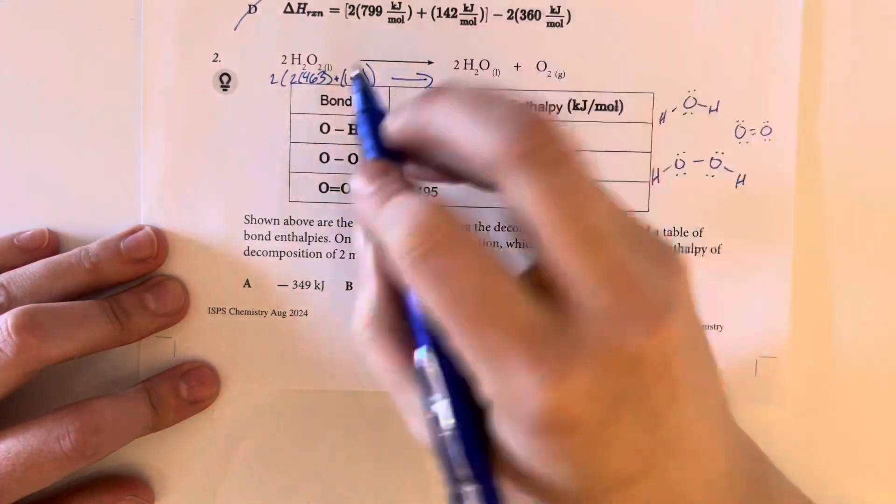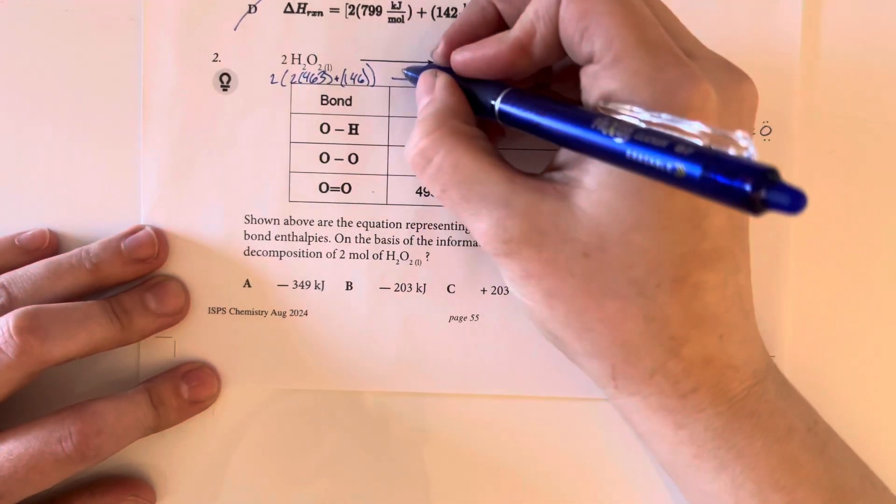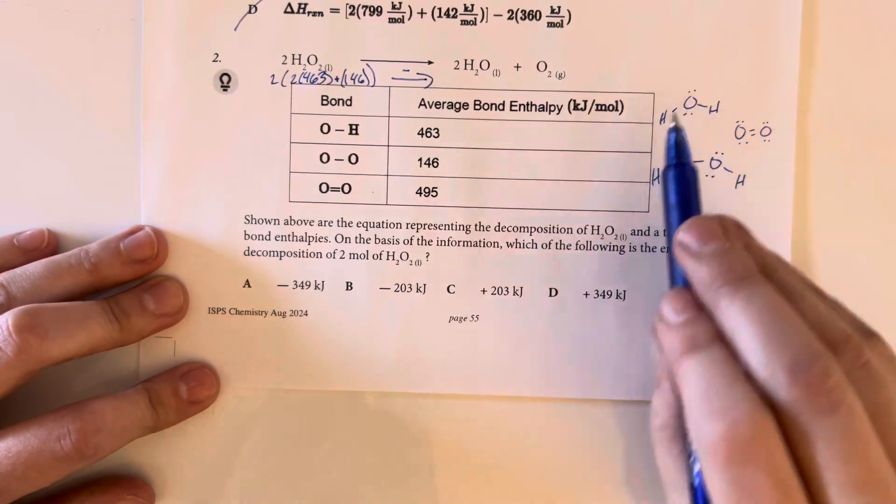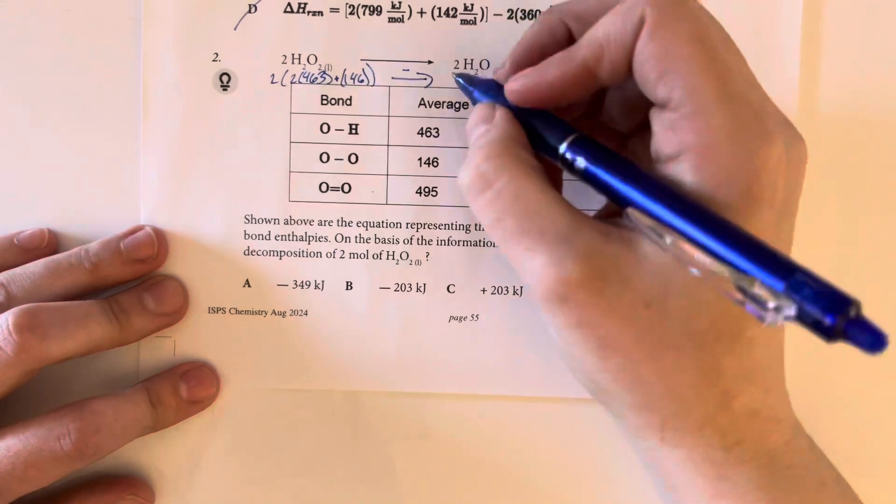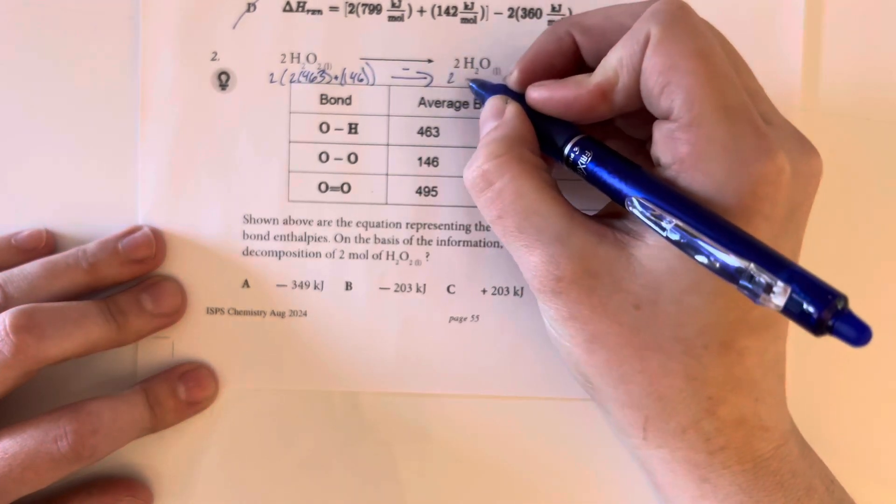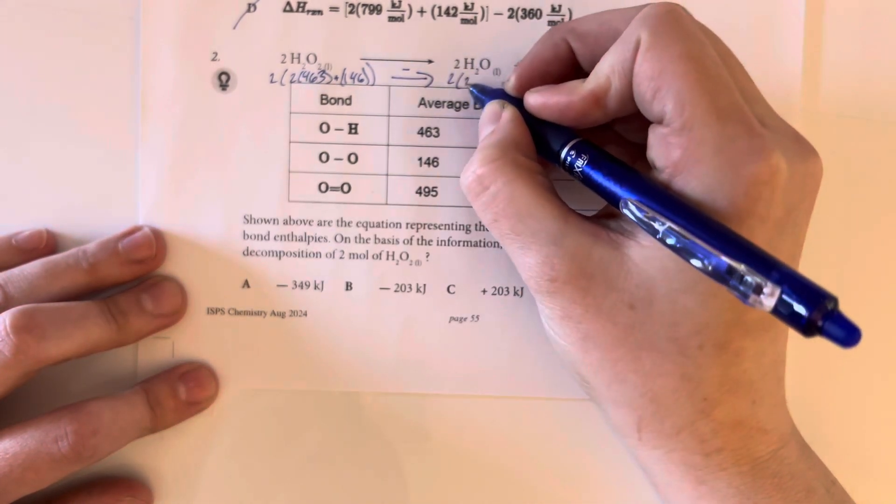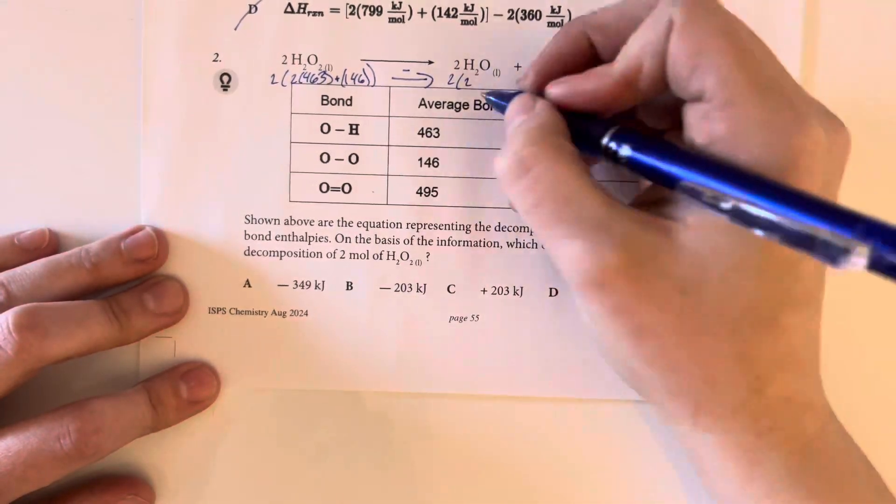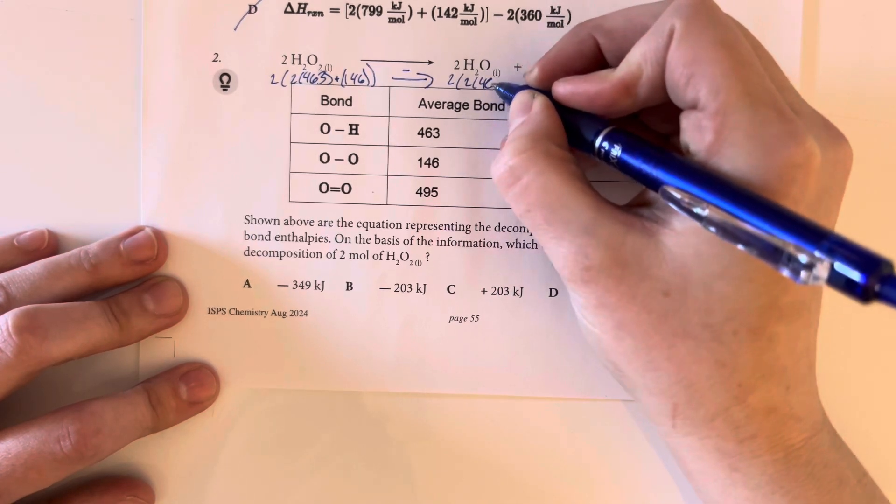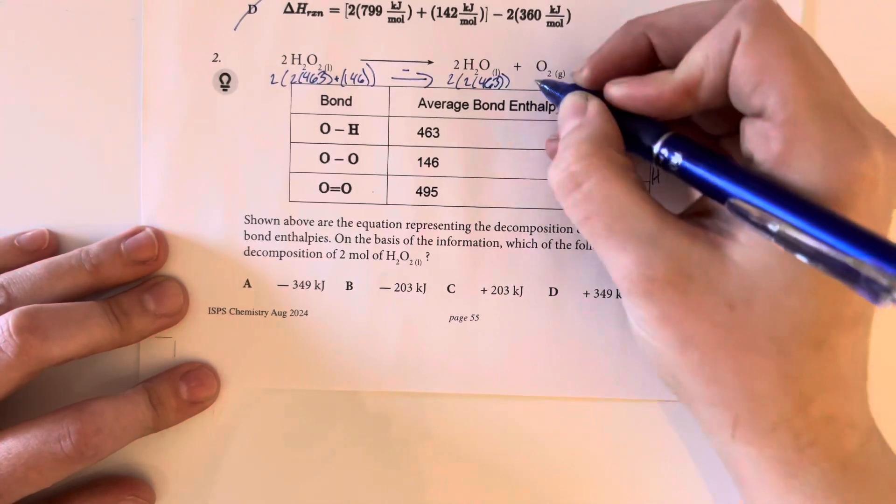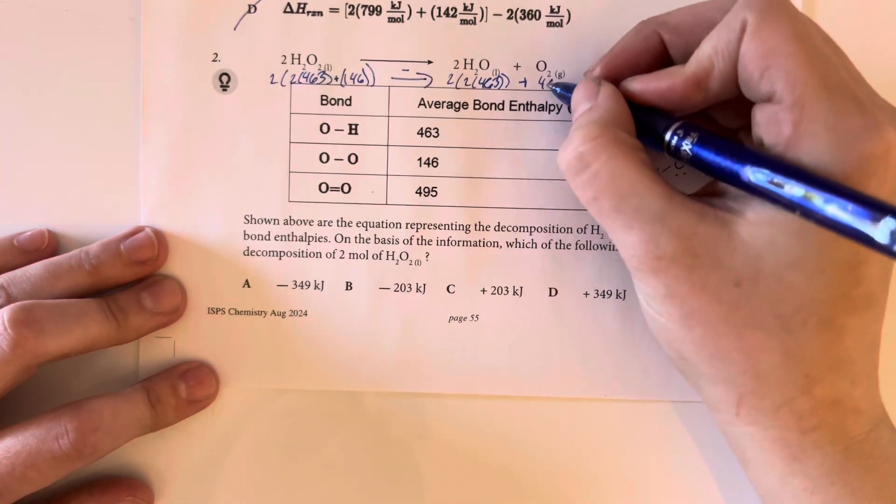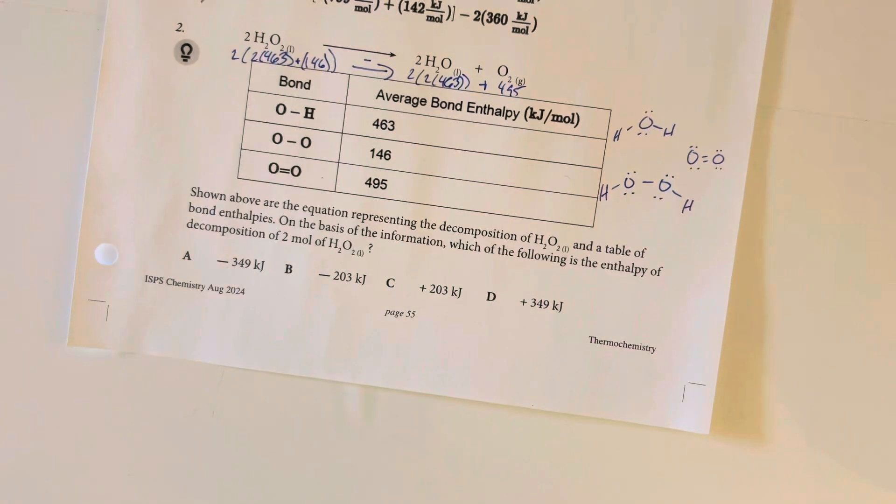That's my reactants. Then I'm subtracting my products. My products here, I have water. I have a single bond here. I have two of them though. So that's two waters. And inside the water, there are two single bond hydrogen to oxygen. So two times the 463. And that plus our double bonded oxygen at 495. Let's plug that into the calculator.